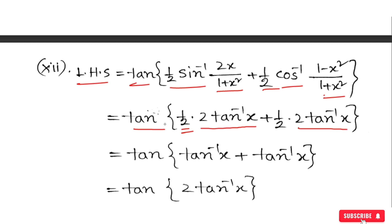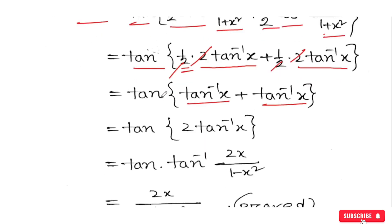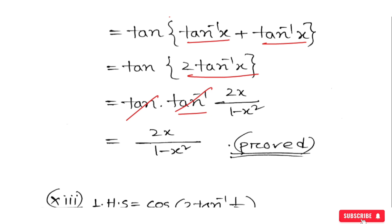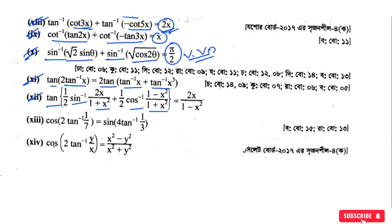OK — 2x by (1+x²) and you have to solve it. You have tan⁻¹x, then we have tan plus x plus 2x under x. So you have to solve 2x by 1 minus x square.